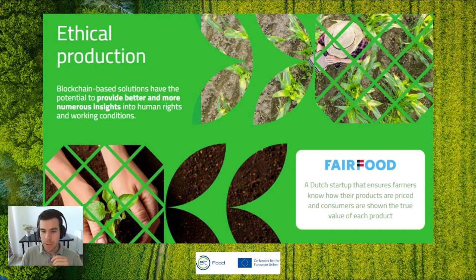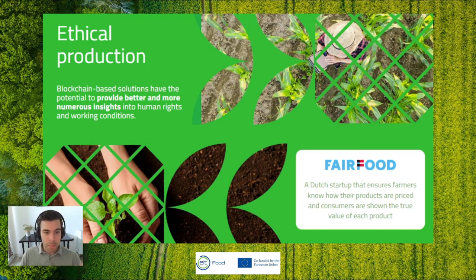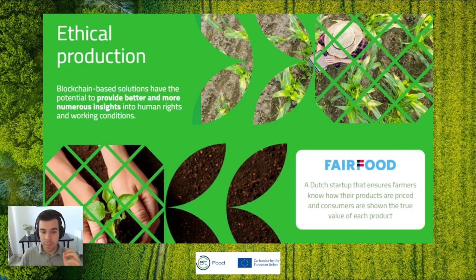Next is ethical production. We often hear about situations where food production, agriculture, and farming aren't as ethical as claimed — fair trade chocolate in South America, for example. Is it really fair to the people working there? Blockchain-based solutions have the potential to provide better insights into human rights. We can monitor factory working conditions, identify modern forms of slavery, identify child labor, and monitor employee exposure to toxins — ensuring the work environment is safe.